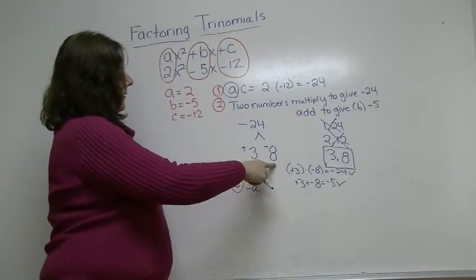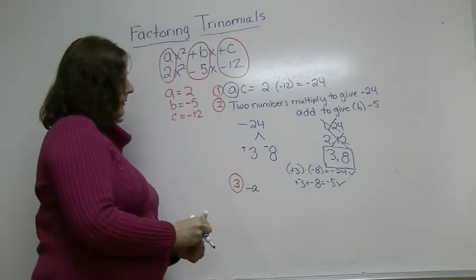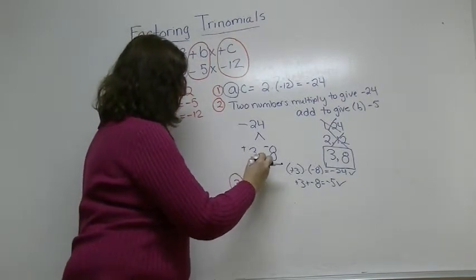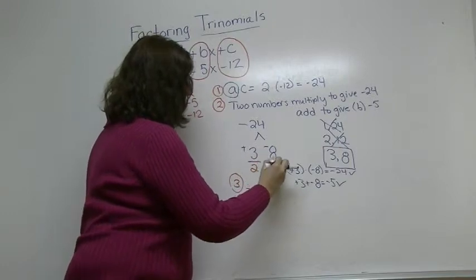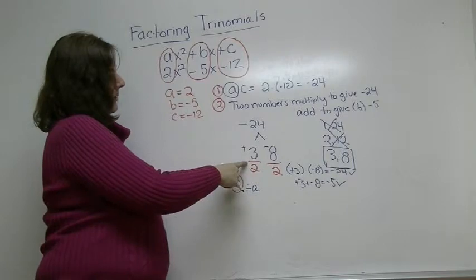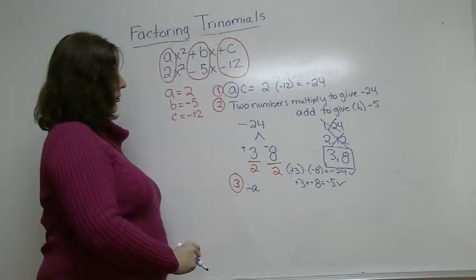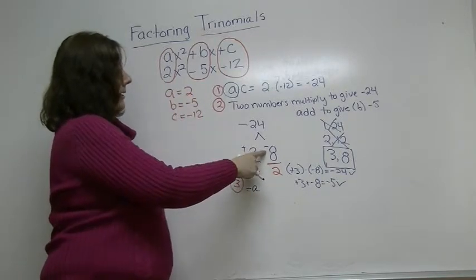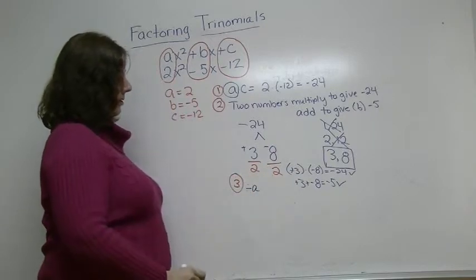So we're going to take the two numbers we just found, and we're going to divide them both by A. So positive 3 divided by 2, our A term, and negative 8 divided by 2.